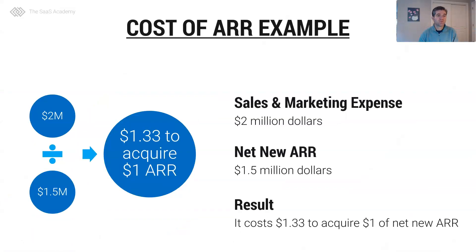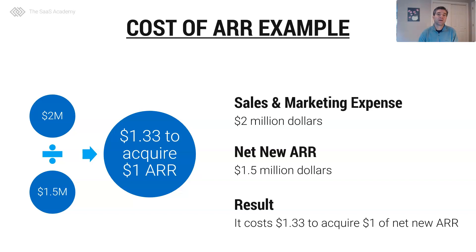So in a simple example, I have $2 million of sales and marketing expense that I divide by $1.5 million of net new ARR. And net new ARR is our ARR booked from new logos, expansion, and potentially taking out downgrades in that number.